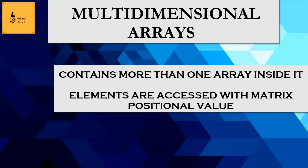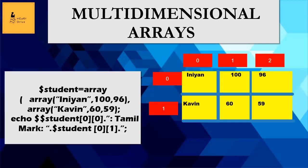A multidimensional array is an array which contains more than one array inside it. The elements of a multidimensional array are considered in matrix format. In this array, we have two arrays inside the main array, and all the elements are accessed with matrix positional values.